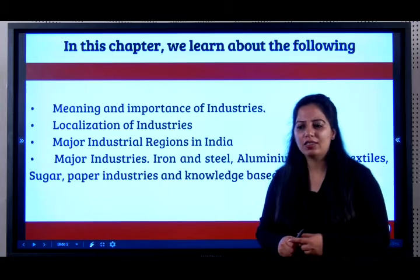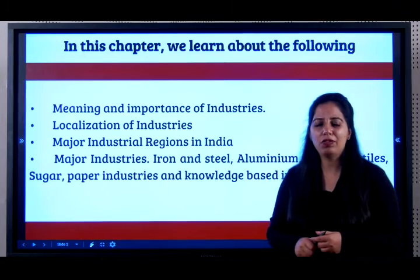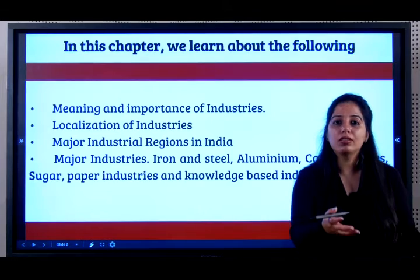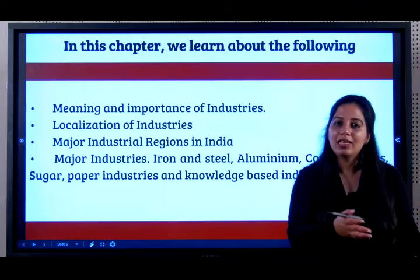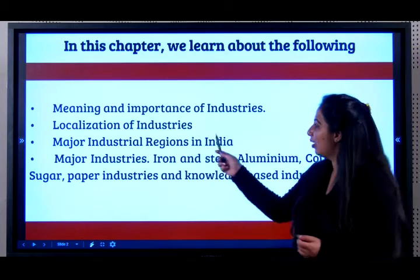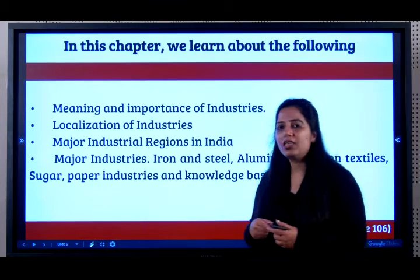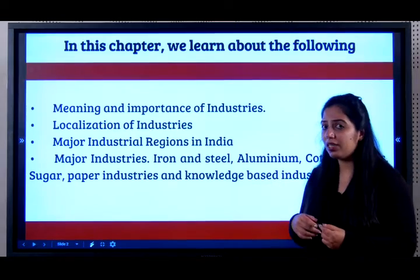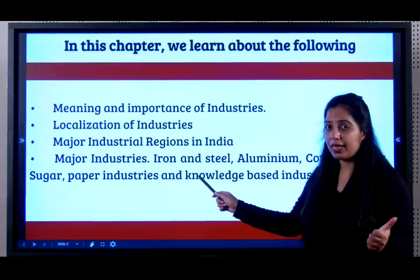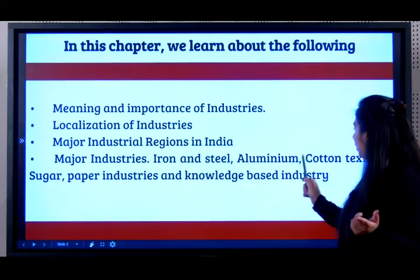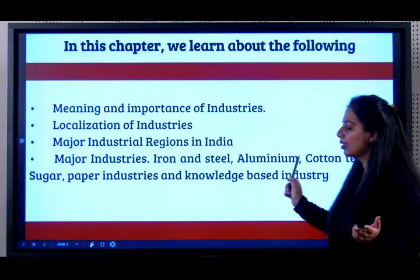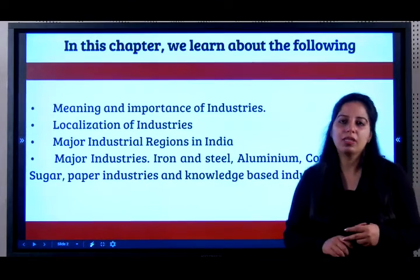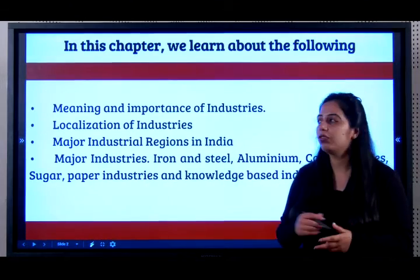Localization of industries — what is the meaning of localization? For example, a cotton textile industry will be located where cotton is grown. We will also be learning about major industrial regions in India and major industries: iron and steel, aluminum, cotton textiles, sugar, paper industries, and the knowledge-based industries of India.